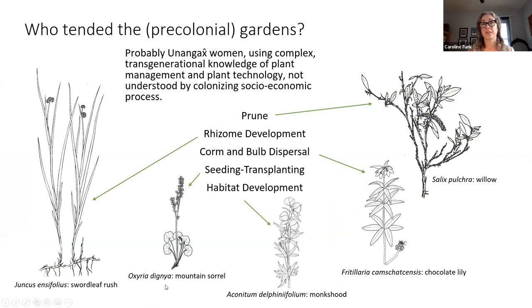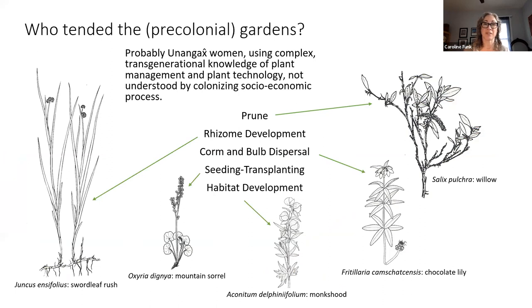The ethno-historical documents give us what we suspect is only a subset of information about Unangax plant use. Plants and women with their expert knowledge and labor rarely appear. We have many descriptions of kayaks, sea mammal hunting, fishing in the sea — but where are the plants? Where are the women and their work? Where are the gardens, and who were the gardeners before Russians arrived? Villages are multi-generational, occupied episodically — possibly continually for thousands of years — presumably by consistent families. The plants and other resources in the area were known and, as we hypothesize, tended by the people who lived there — and when we say people, Anne and I might mean specifically women.